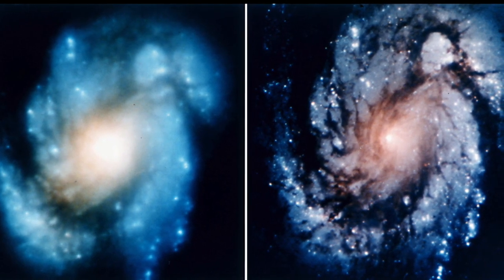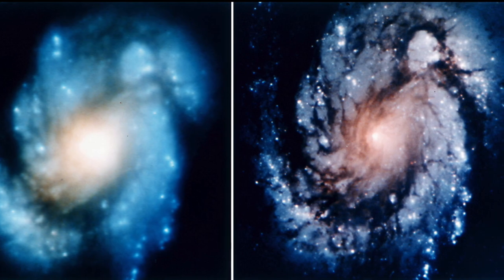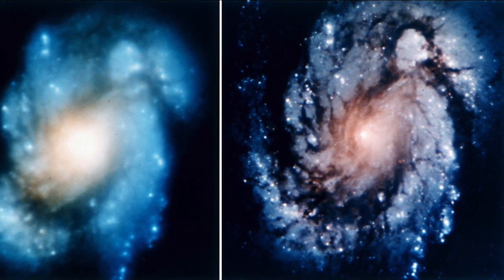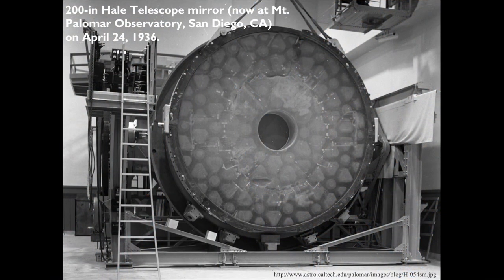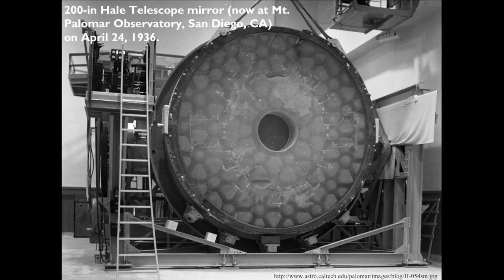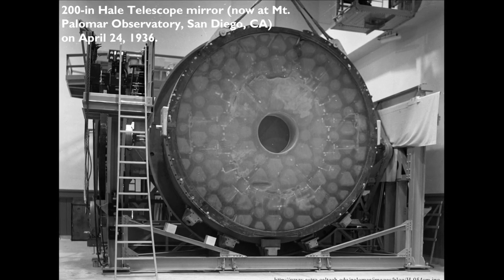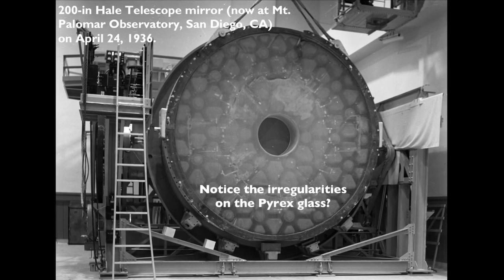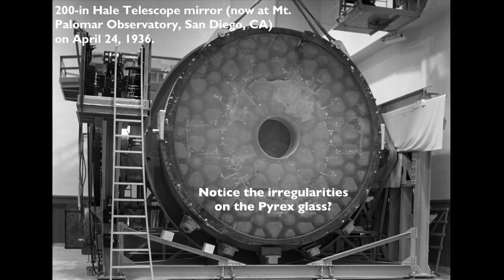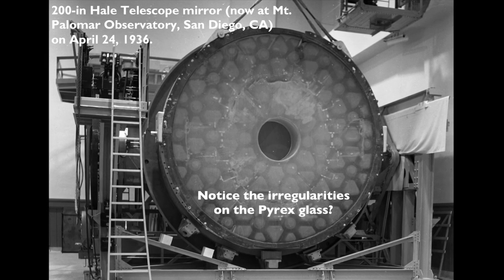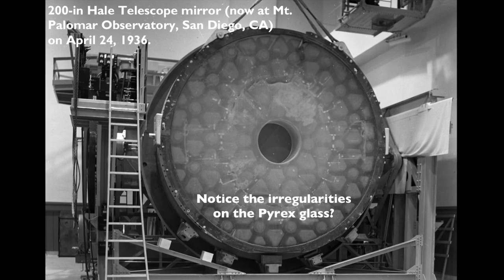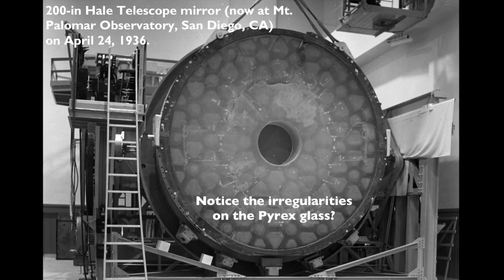Before the launch of space-based telescopes, we were still building larger and larger reflectors here on the ground. This is the mirror base for the 200-inch Hale telescope, now at Mount Palomar Observatory in San Diego, California, and the irregularities in the Pyrex glass are quite evident. But notice that the glass makers used a honeycomb pattern in the base to ensure low weight and high stiffness.